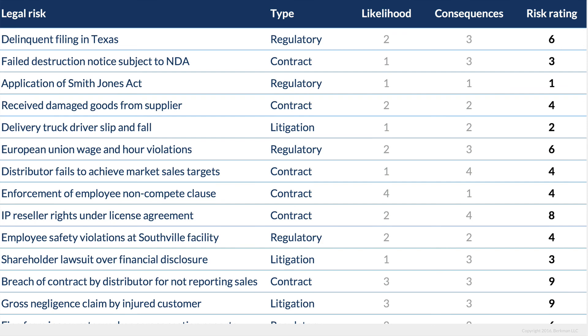For now, the risk registry is a list of all of our legal risks. The basic registry has five elements: One, the name of the legal risk. Two, the type of the legal risk—contract, litigation, regulatory, or structural. Three, the likelihood rating. Four, the consequences rating. And five, the overall risk rating.